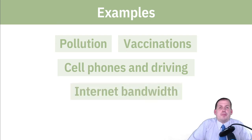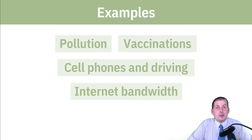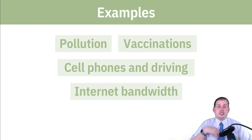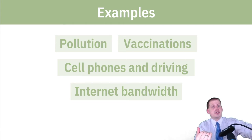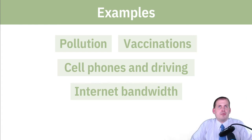Internet bandwidth has externality issues as well. If enough people use the internet at the same time — like on campus at noon when everyone's watching videos, or at home in the evening when everyone's watching Netflix — it reduces bandwidth and slows everyone's connection. That's a negative consumption externality: your choice to watch a show on Netflix causes negative consequences to other people by slowing down their internet. You're not getting charged for hurting other people's bandwidth, so you create a negative externality.